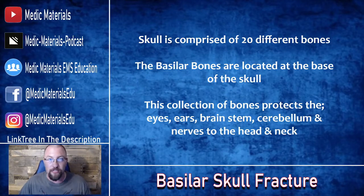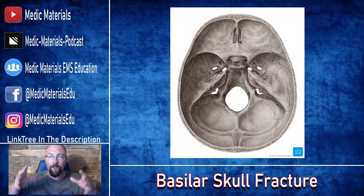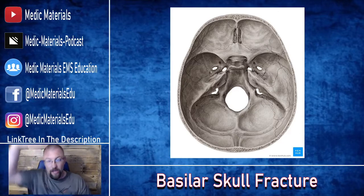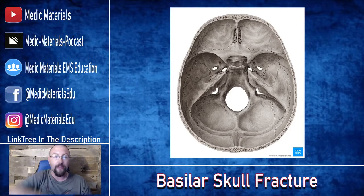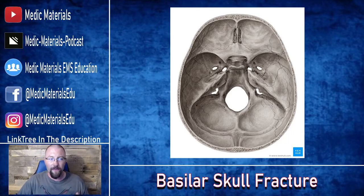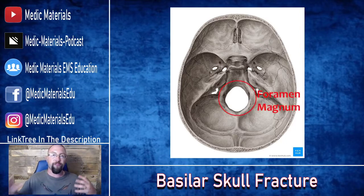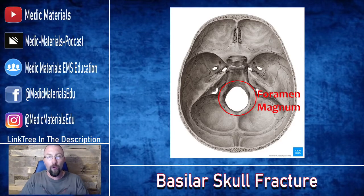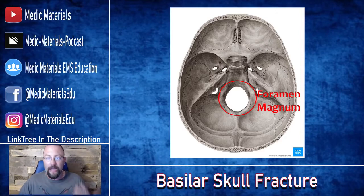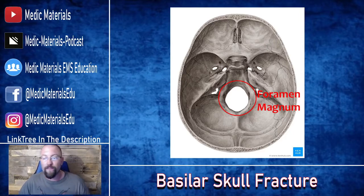Here is a shot of the skull coming from the top down — we're looking superior down to inferior. All of the bones you see here are your basilar bones, that collection of bones at the base of the skull. You have the foramen magnum here, which is the large hole where your brainstem attaches to your spinal cord. That's an important structure at the base of the skull — it's where your head actually sits on the axis, or C1 vertebrae.